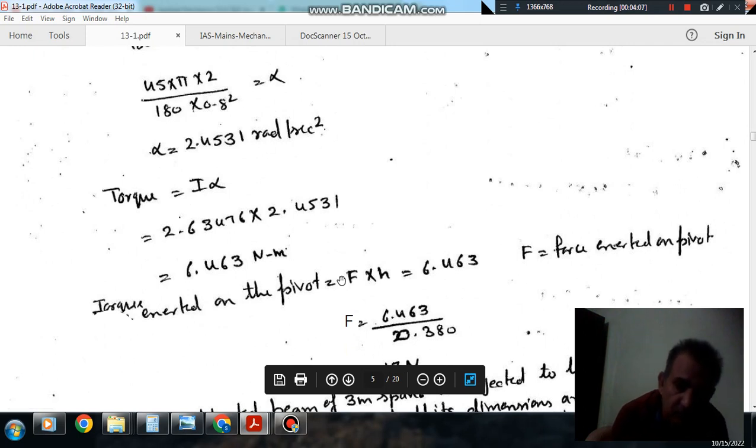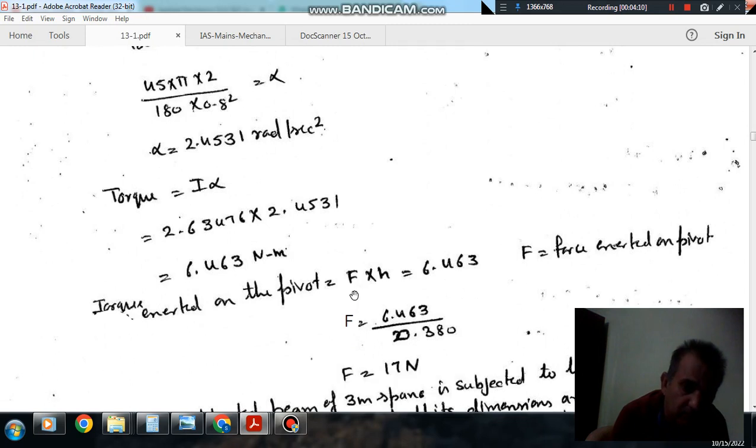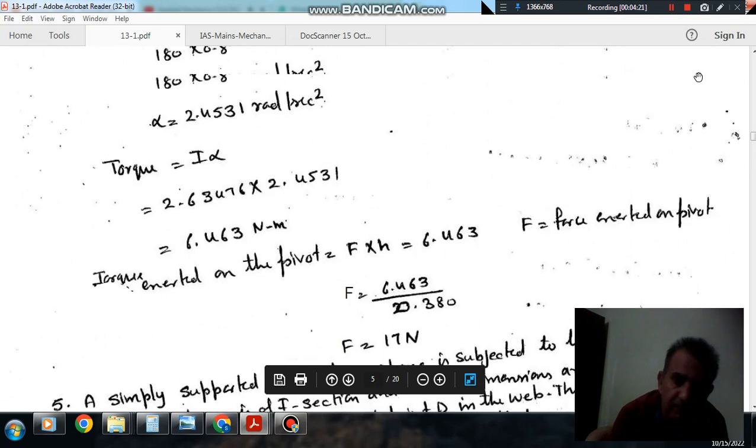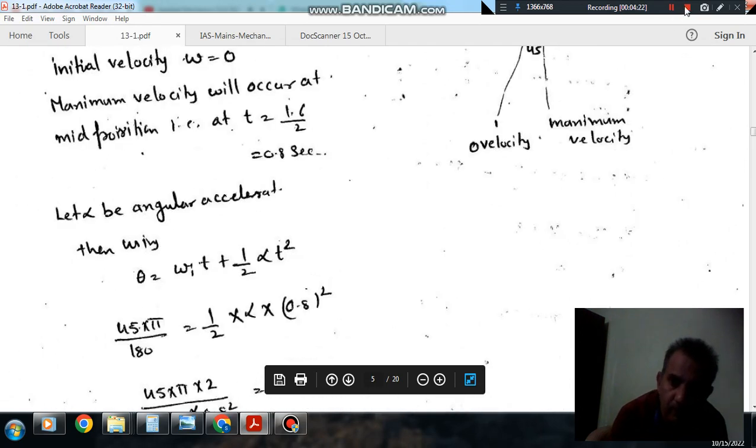That is the torque exerted on the pivot. And from this, we can find out the force exerted on the pivot by taking this torque equal to F into h. F is force exerted on the pivot and h is the center of gravity distance from the pivot. So F comes out as 6.463 divided by 0.380 which equals 17 Newtons. Thank you.